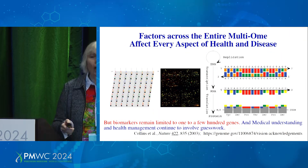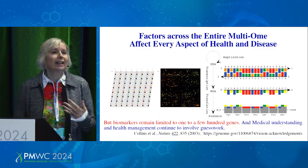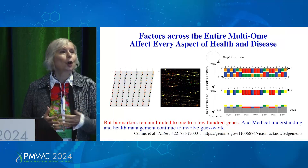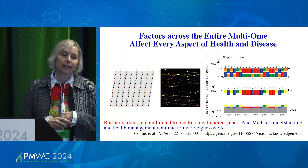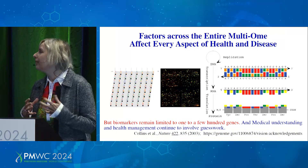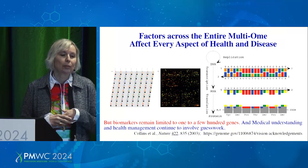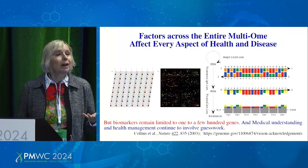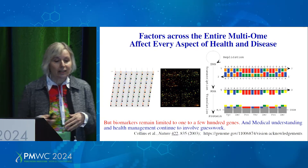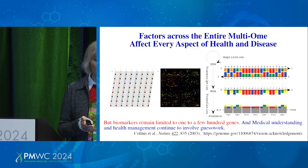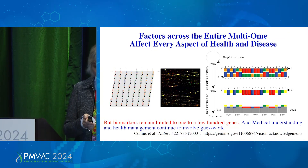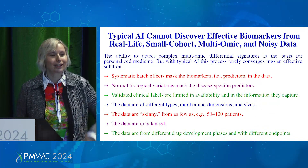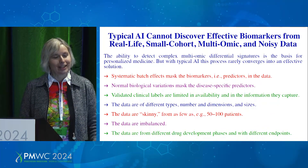We all agree that disease, as well as health, are complex and factors across the entire multium — at the very least the entire genome — affect their every aspect. But biomarkers remain limited to just one, mostly one, and sometimes a few hundred genes. And that's 20 years after the Human Genome Project.